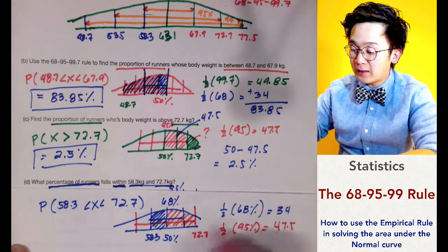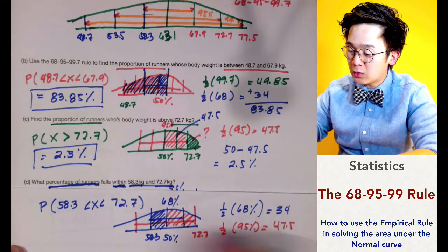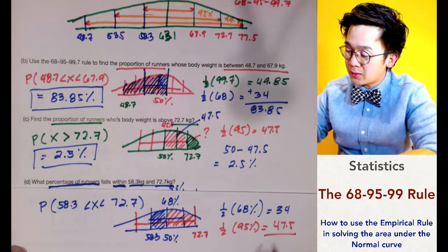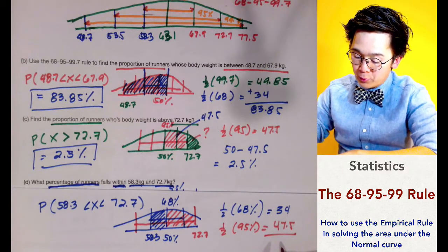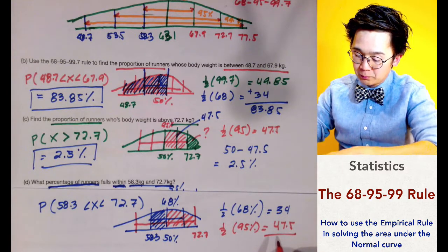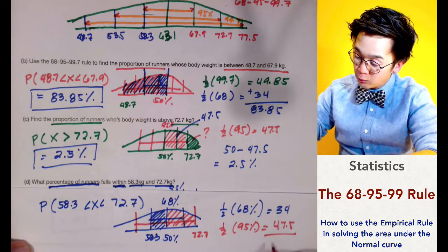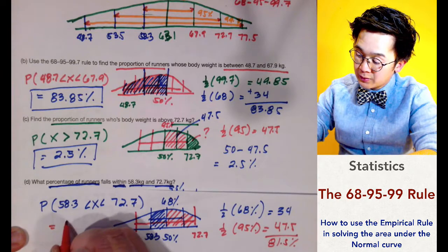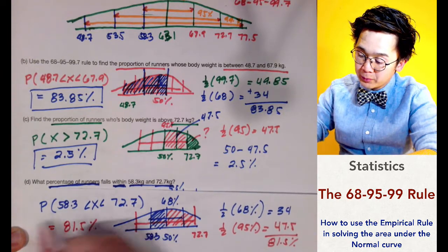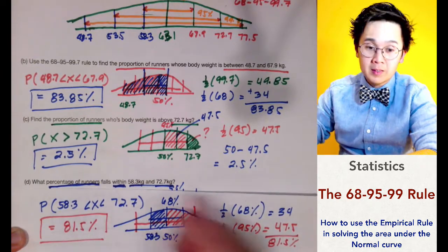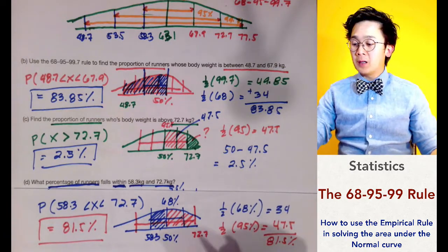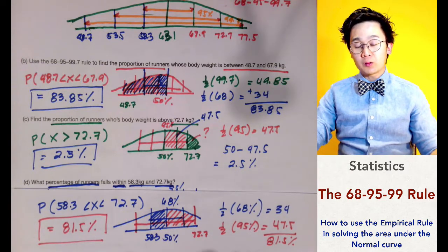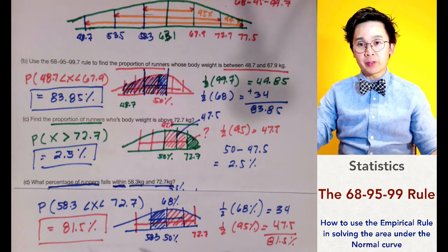Adding the two areas together, 34 plus 47.5 gives us 81.5%. So the area under the curve between 58.3 and 72.7 kilograms is 81.5%. This is how we answer percentage problems under the normal curve using the empirical rule, or the 68-95-99.7 rule.